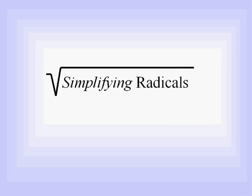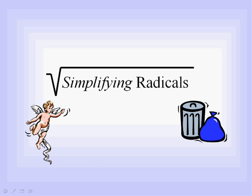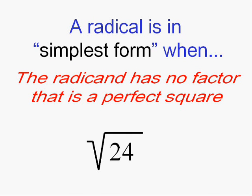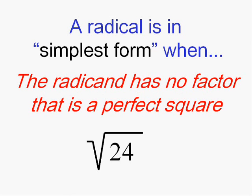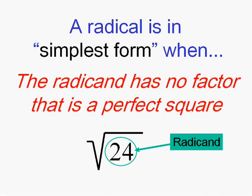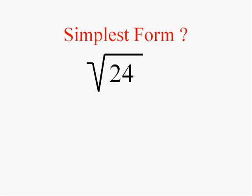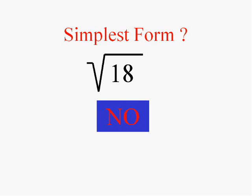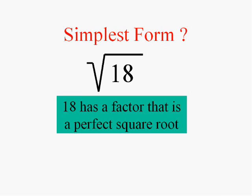Much like a fraction is in simplest form when you can't divide the top and bottom by some common number, a radical is in simplest form when the radicand — the number inside the sign — has no factor that is one of those perfect squares we just talked about. For instance, the square root of 24 is not in simplest form because it has a factor that is a perfect square: 4. The square root of 18 is not in simplest form because it has a perfect square as a factor: 9. You'll need to know those perfect squares.